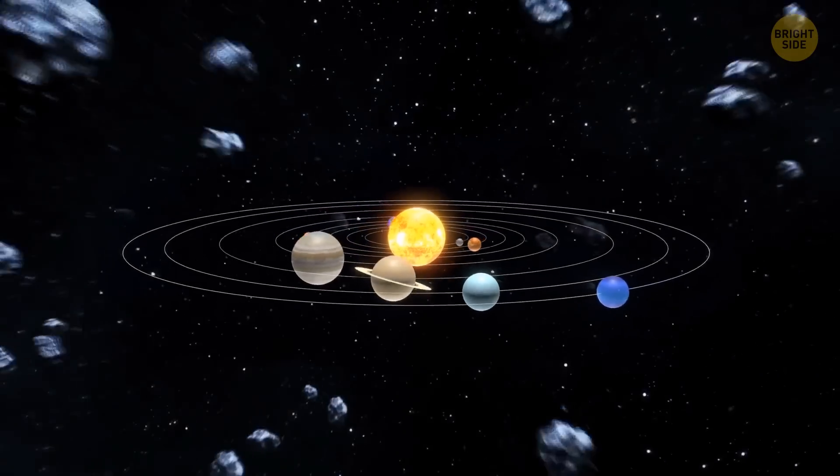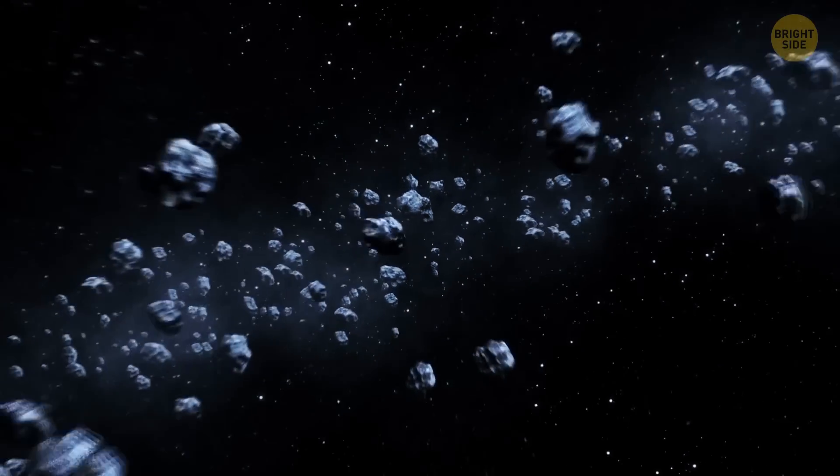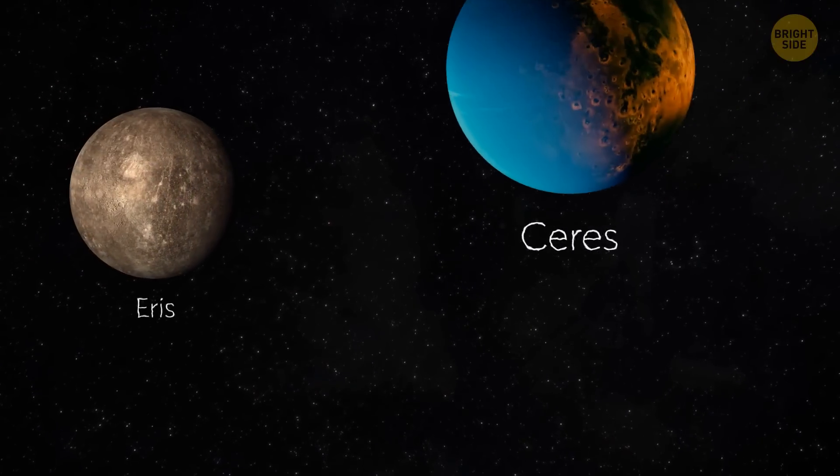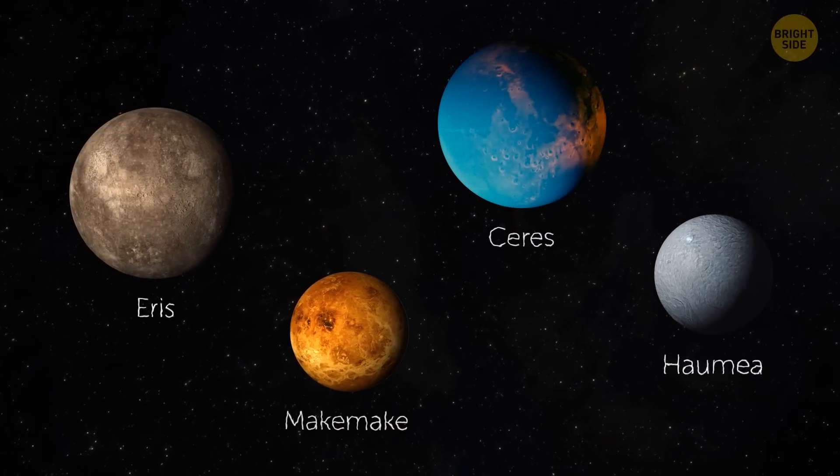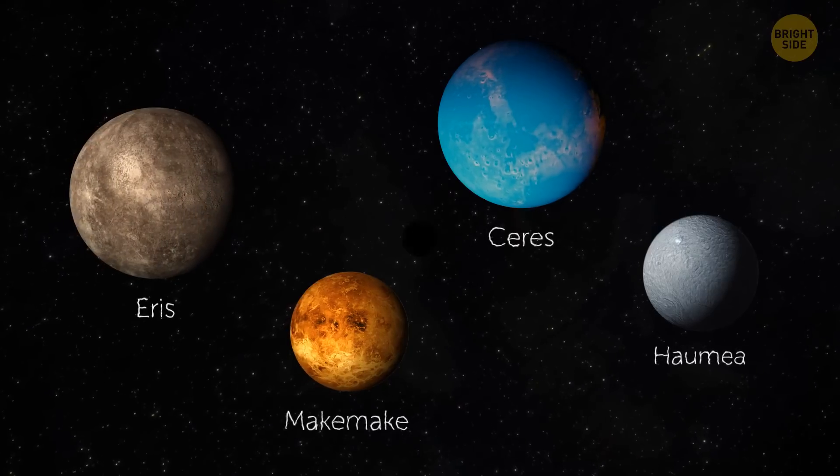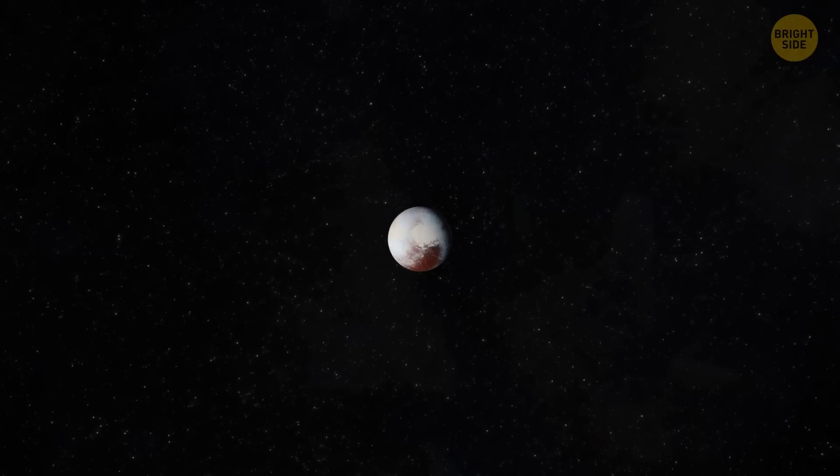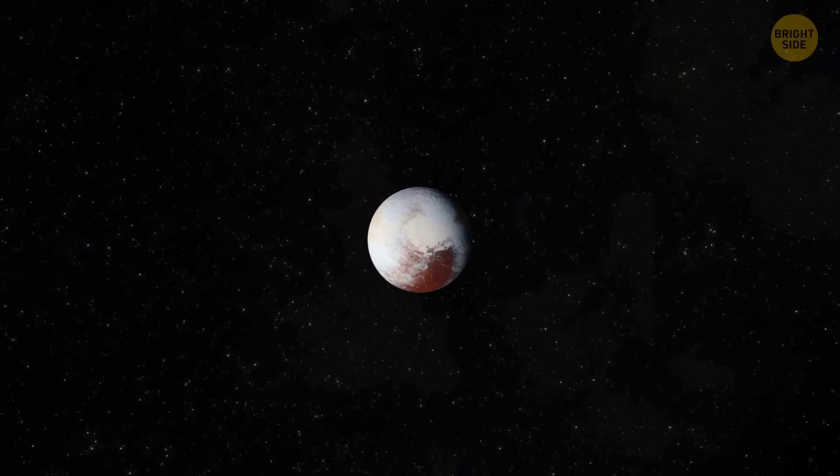However, the more we explored the Kuiper Belt, the more we realized that it's full of these medium-sized objects. We found four more little planets, just like Pluto: Eris, Ceres, Makemake, and Haumea. They all shared the same characteristics. And that's where we figured out that Pluto belongs to another family and created a category of dwarf planets.